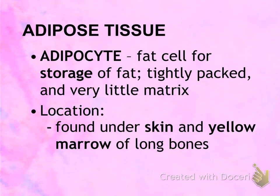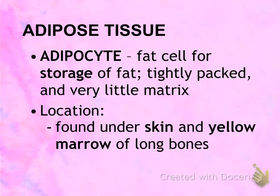The next tissue is adipose tissue. In connective tissue, the names of the cells change depending on the tissue. The cells found in adipose tissue are called adipocytes, which are fat cells, and their job is the storage of fat droplets. Locations where you might find adipose tissue include under the skin, in the yellow marrow, and surrounding organs.